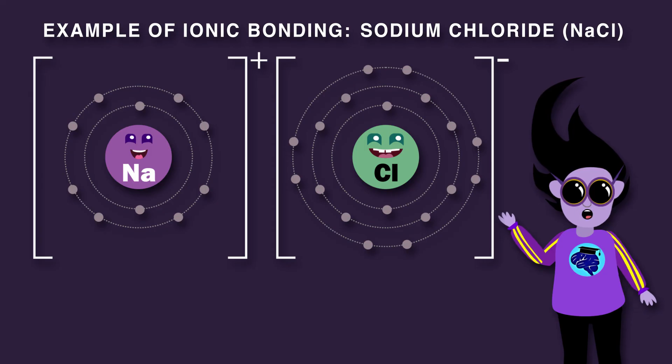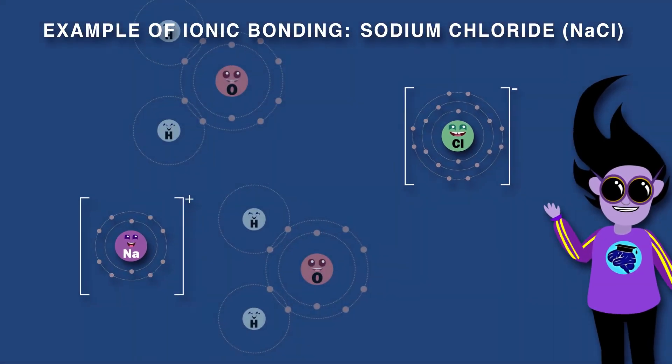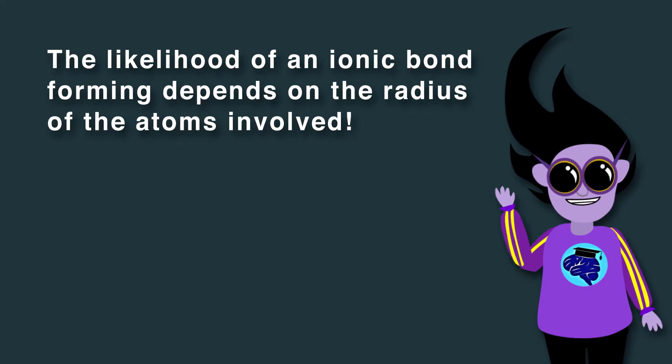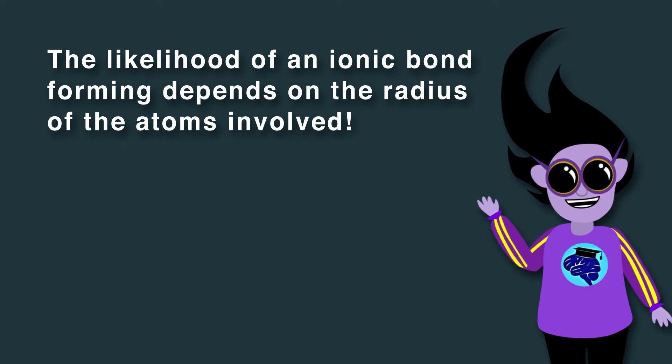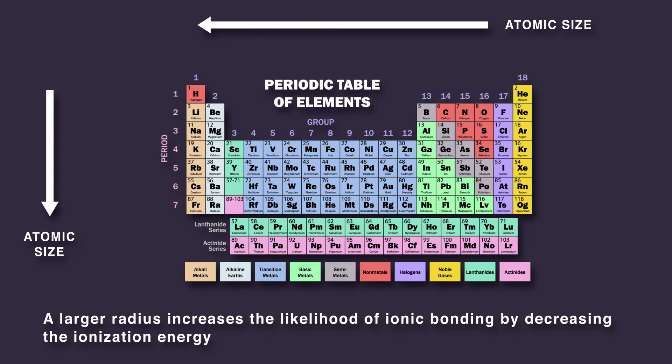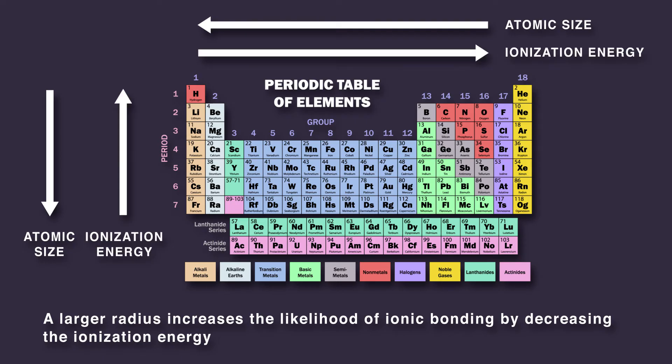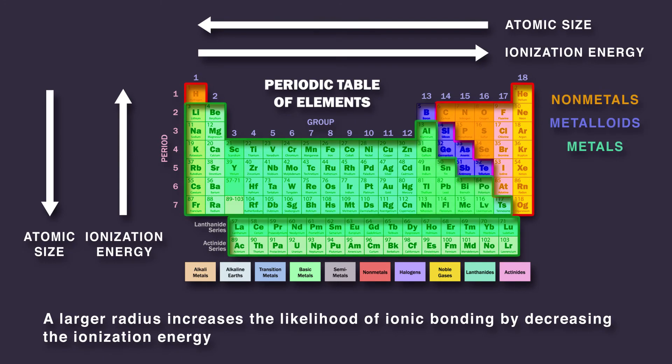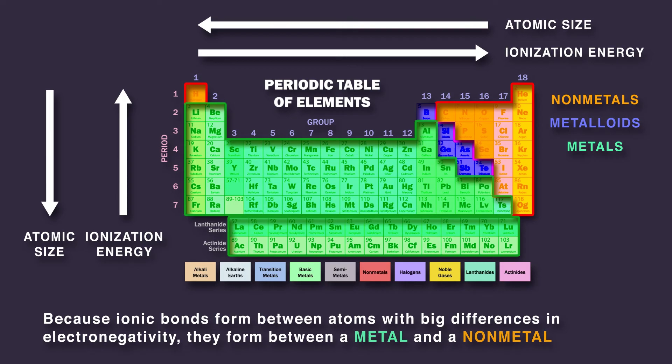Note that ionic compounds can dissociate into ions in solution. The likelihood of an ionic bond forming depends on the radius of the atoms. A larger radius increases the likelihood of ionic bonding by decreasing the ionization energy. Because ionic bonds form between atoms with big differences in electronegativity, they form between a metal and a nonmetal.